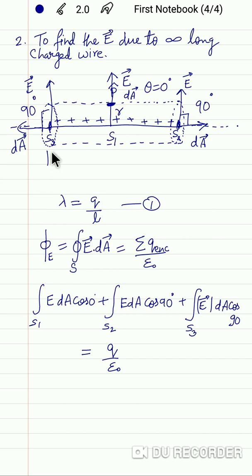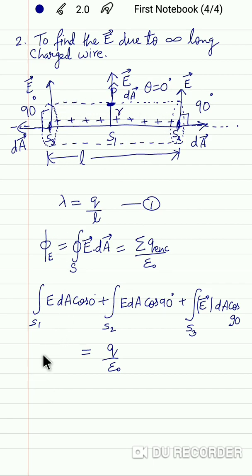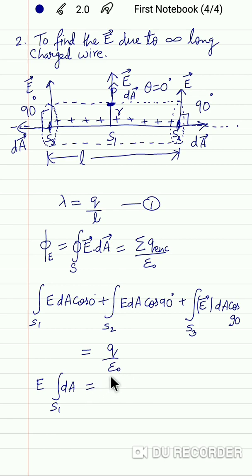Let the length of this cylindrical Gaussian surface be l. Then the charge enclosed Q equals lambda times l. Since E is constant in magnitude, the integration of dA gives the area of the curved surface, so we have E times the curved surface area equals lambda·l upon epsilon naught.